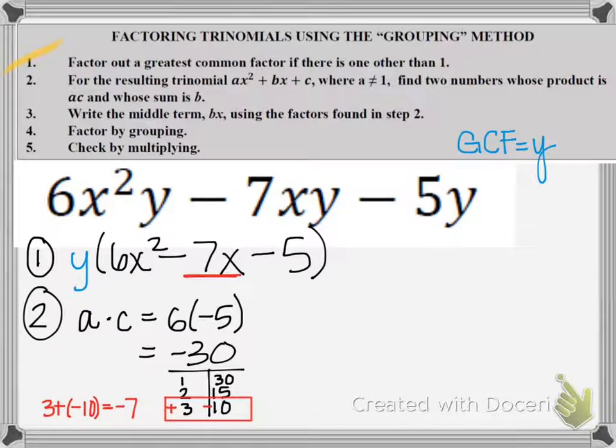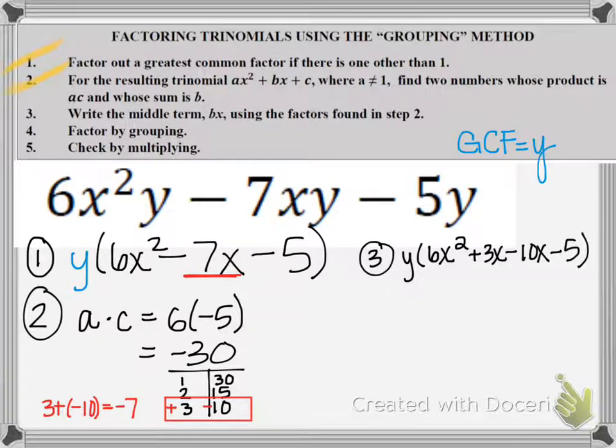Now I can move on to step 3. So for step 3, that middle term, negative 7x, I want to rewrite that using the positive 3 and the negative 10. So when I have 6x squared, after 6x squared, I'm going to write plus 3x minus 10x minus 5. And notice I'm keeping the GCF of y as part of my problem. I can't get rid of that. That stays with me the whole time until I'm done.